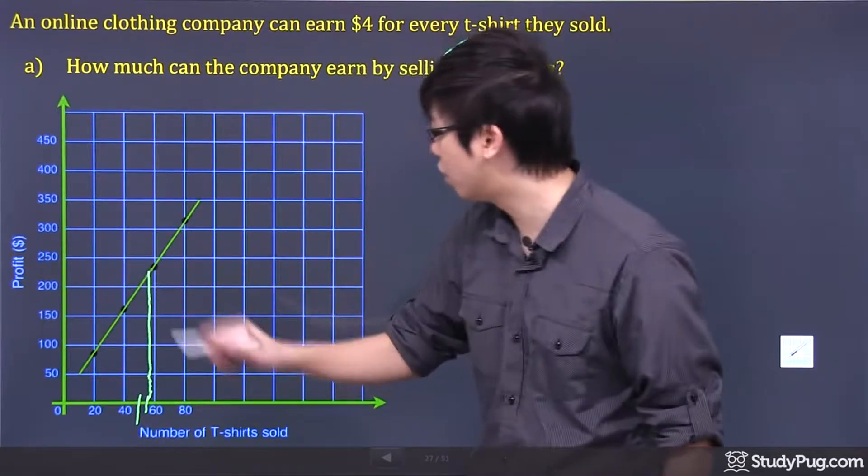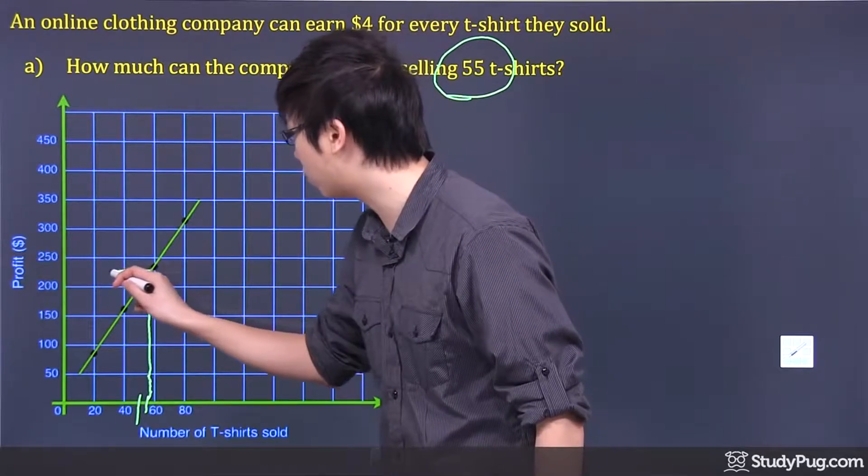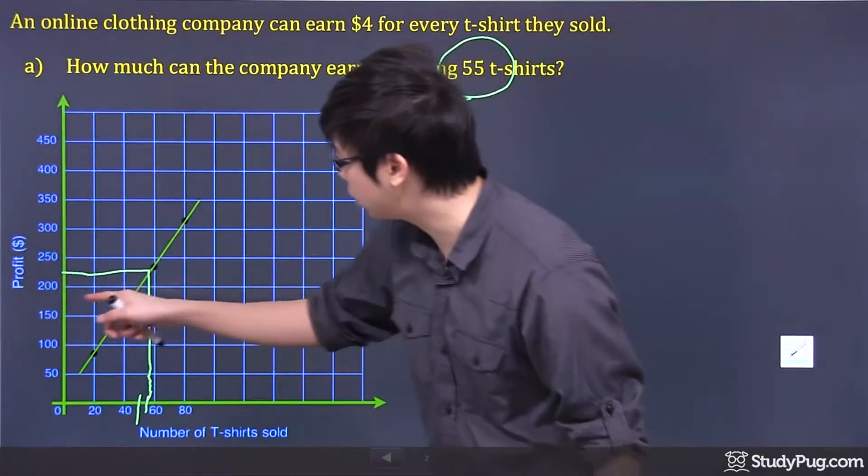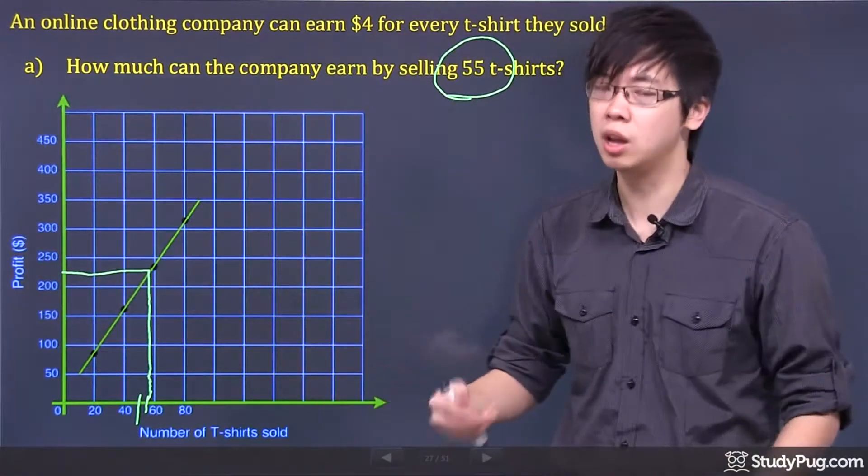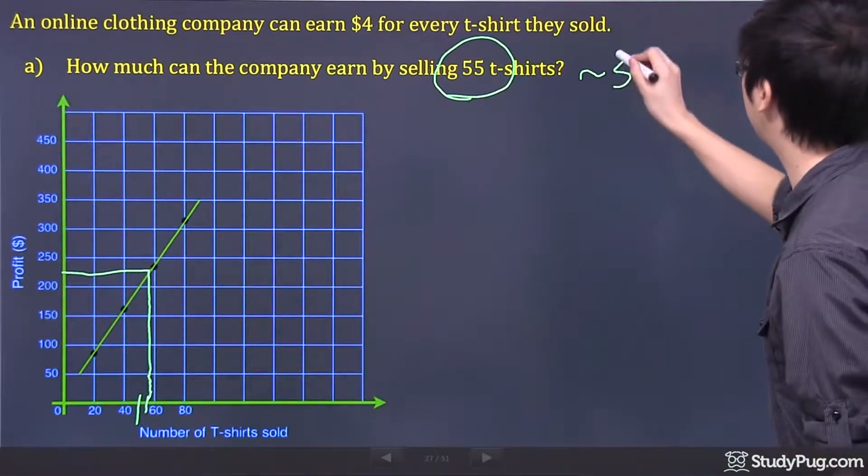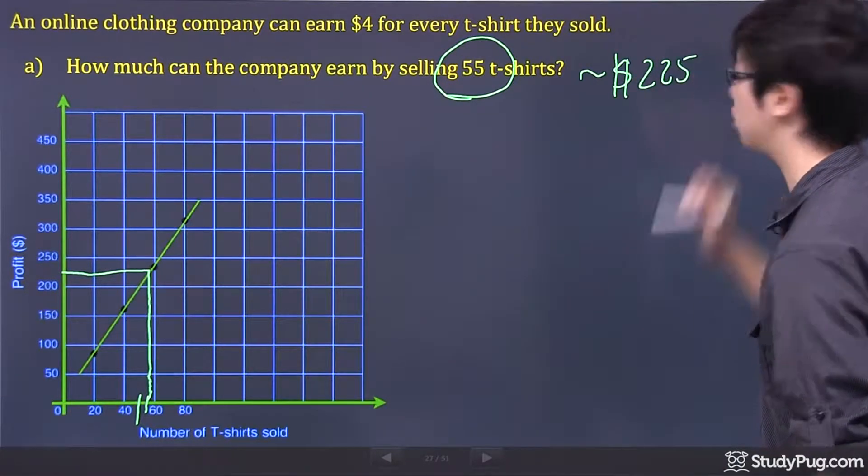once you hit the graph, you're going to have to go straight across and you get yourself approximately, give or take, halfway between 200 and 250. I would say approximately, if I solve graphically, it's about $225, okay?